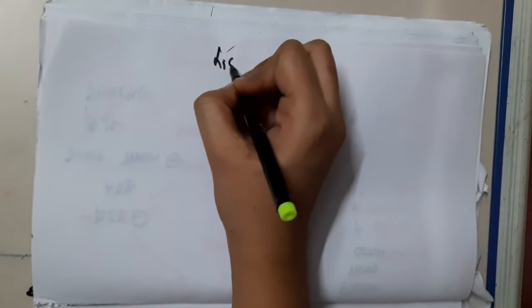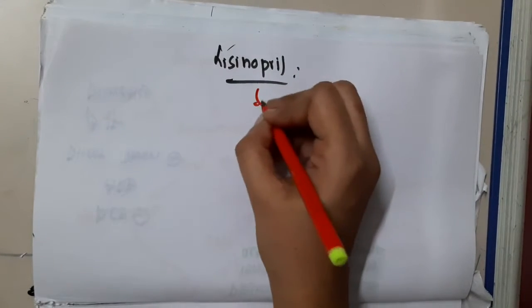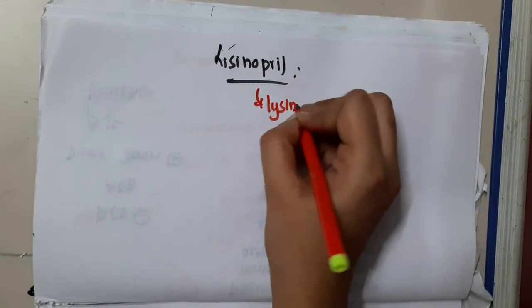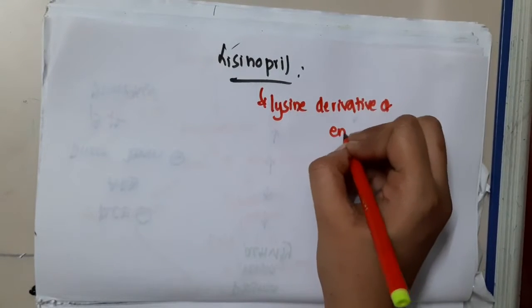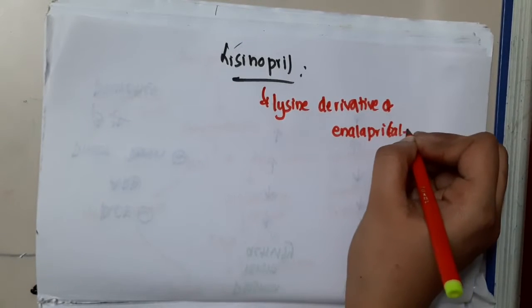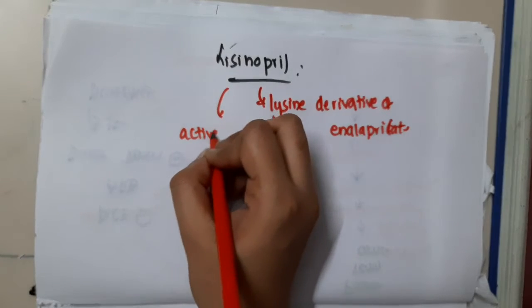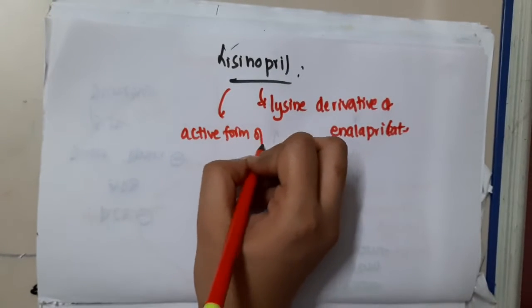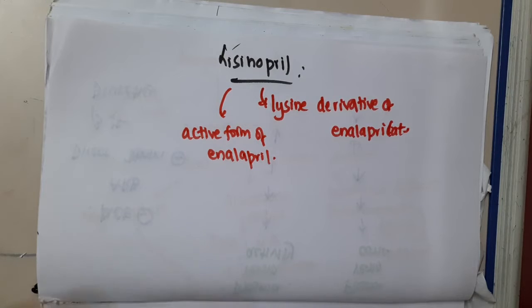Hello friends, let us now learn some important points about lisinopril. Lisinopril is a lysine derivative of enalaprilat. Lisinopril is actually an active form of enalaprilat — in other words, the active form of enalapril is lisinopril.